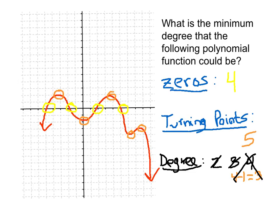Could it be degree 5? No — a degree-5 polynomial can have at most 5 zeros, so zeros are fine. But the maximum number of turning points for degree 5 is 5 minus 1, which is 4. Since this graph has five turning points, it cannot be degree 5 either.